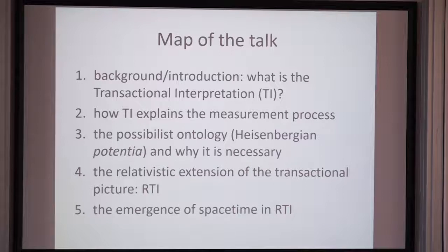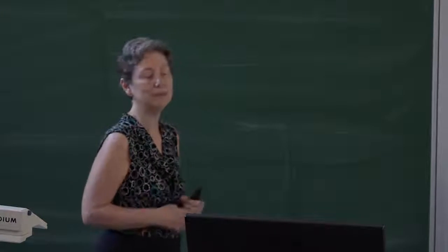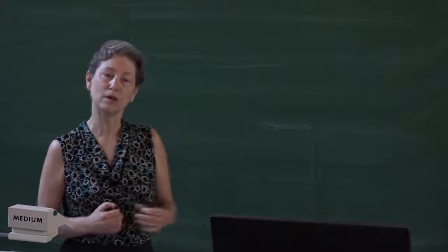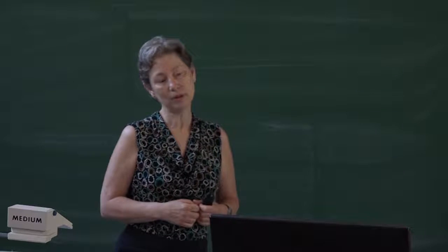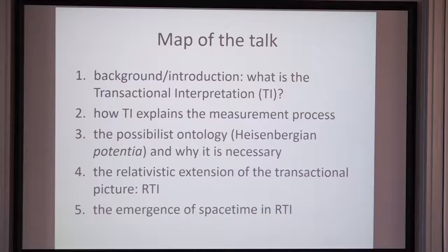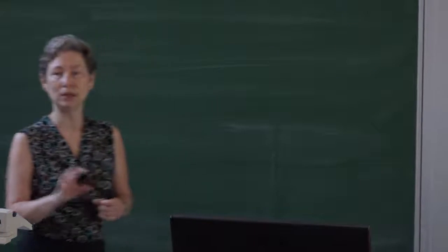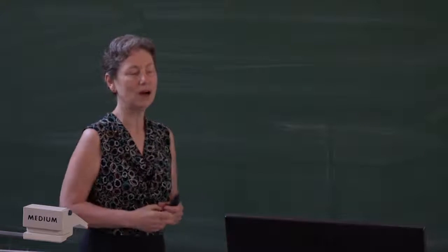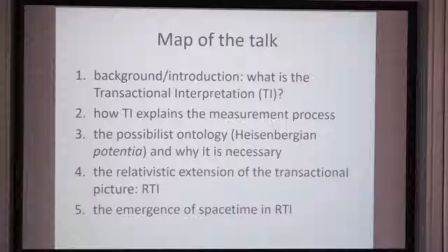Here's a quick overview of what I'm going to talk about. I'll discuss what TI is and how TI explains the measurement process. Then, on a philosophical consideration, we're going to talk about what kind of reality we're dealing with in this picture, going back to Heisenberg's idea of potential. Then I'll talk about the relativistic extension of the transactional picture, which I call RTI — previously called PTI for Possibilist Transactional Interpretation in my 2012 book, but basically the same thing. And then I'll talk about how space-time is something emergent through the measurement process in RTI.